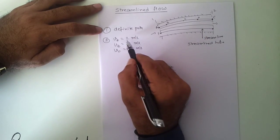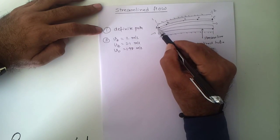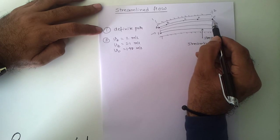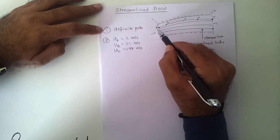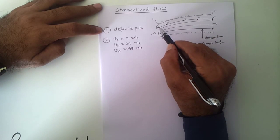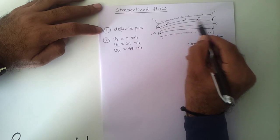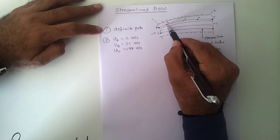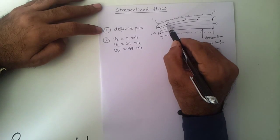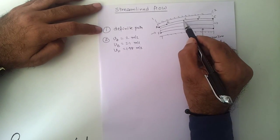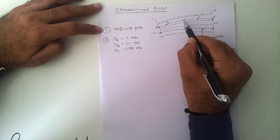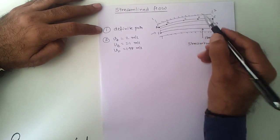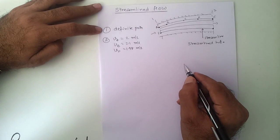Velocity is not constant throughout the streamline, but it is fixed at each location. The velocity at D will always be a fixed value — it cannot change to 2.1 or 2.2 or 1.9. It remains constant at that point, even though values at different locations may differ. That is the second feature of streamline flow.